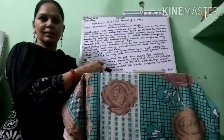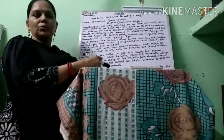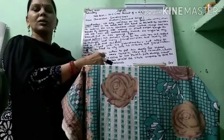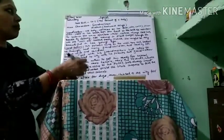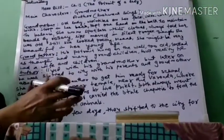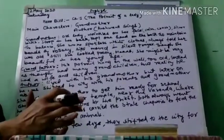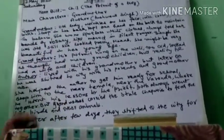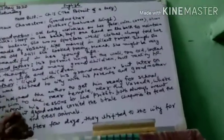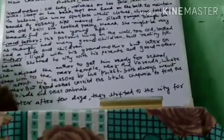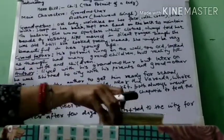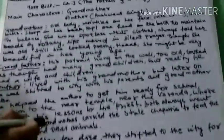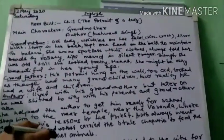To all the students of 11th standard, today we will be starting our English subject chapter 1 from the book On Build. The chapter name is 'The Portrait of a Lady.' Portrait means describing some characteristics of a person. In this chapter, the main two characters are the author, Kushwant Singh himself, and his grandmother.